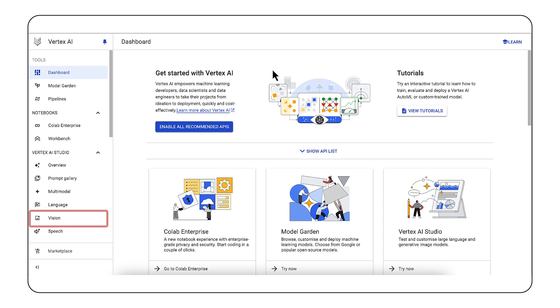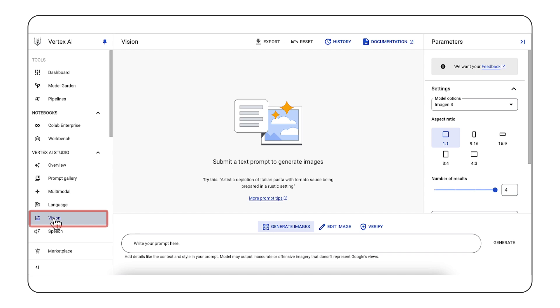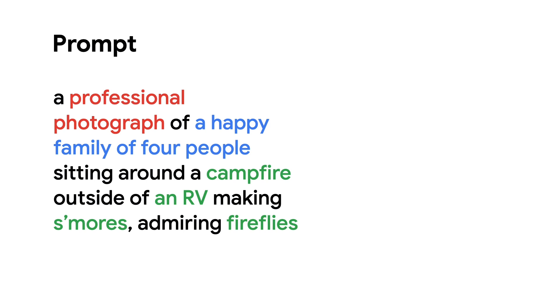One of the highlights of Imagine 3 is its ability to create photorealistic images with fewer distracting visual artifacts. To generate these images, we'll start by navigating to Vertex AI Studio and clicking on the Vision section. Here we'll enter our prompt. Let's say we want to generate a photo of a family on an RV camping trip, capturing them sitting around a campfire making s'mores and admiring fireflies in the night sky. We could ask for a professional photograph of a happy family of four people sitting around a campfire outside of an RV making s'mores, admiring fireflies above their heads.